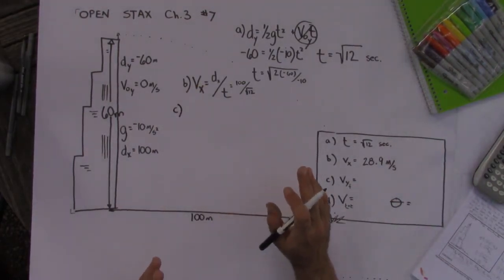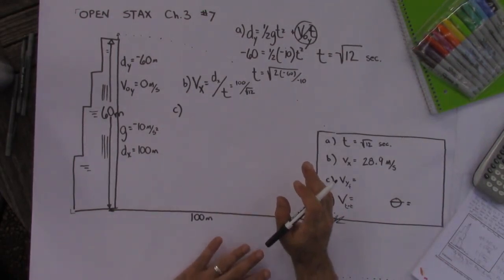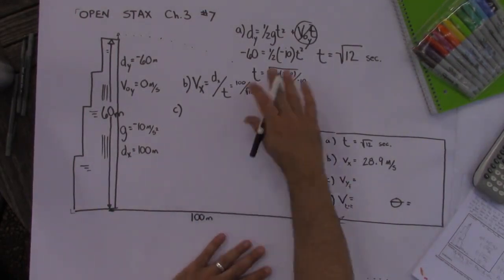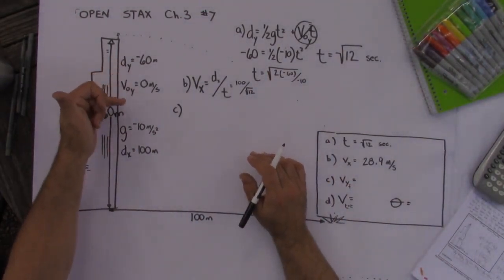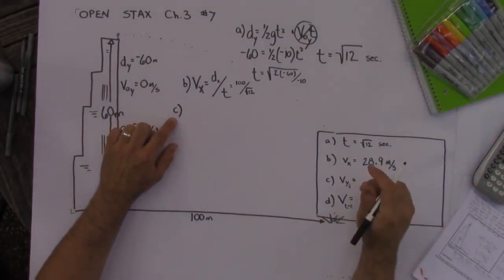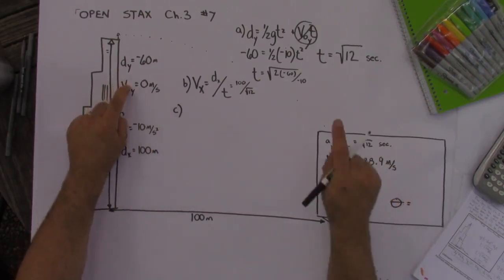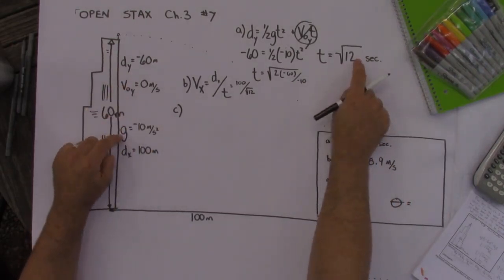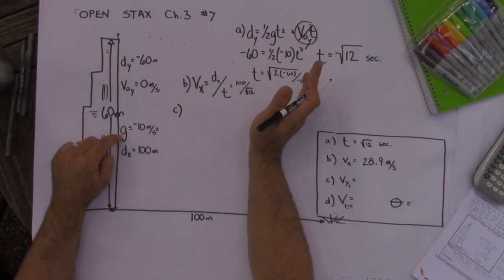All right part c in this problem. The third part. It tells us we need to find out the final velocity in the y direction. I just do the same thing I did for all the other problems. I look and I see what's given and then I look at my formula sheet and I think well I need to find the final velocity in the y direction. I know the initial velocity. I know the time. I know the acceleration in the y direction.